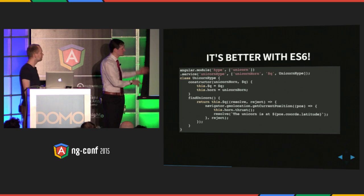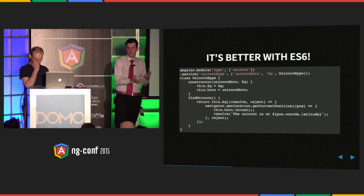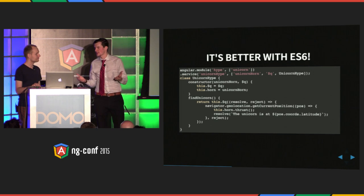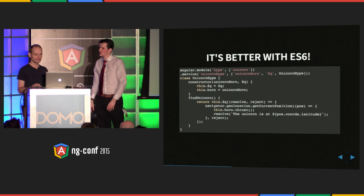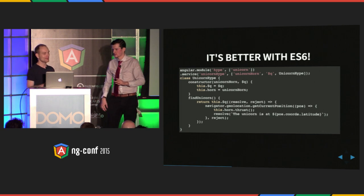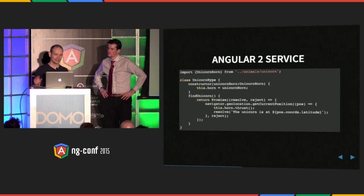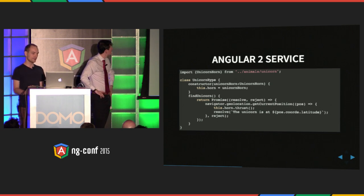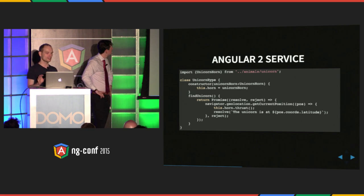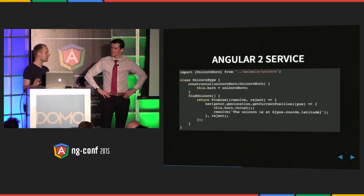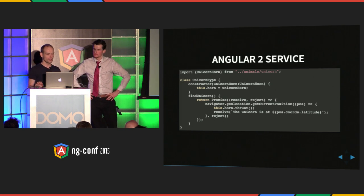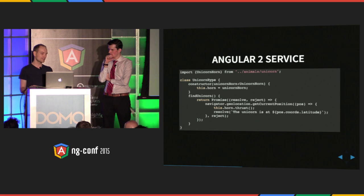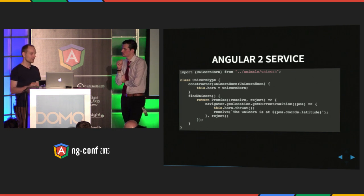We have our Angular 1 service in ES6, but we still have to inject $q and return this.$q — we can't use native promises because we're in Angular 1. When Angular 2 comes out I'm still going to have trouble with this code. So let's look at how the service in Angular 2 would look. We have a different module system — we use ES6 modules. We need to import the class UnicornHorn from the actual file. We have a very similar class with a constructor that has UnicornHorn injected, specified by type.